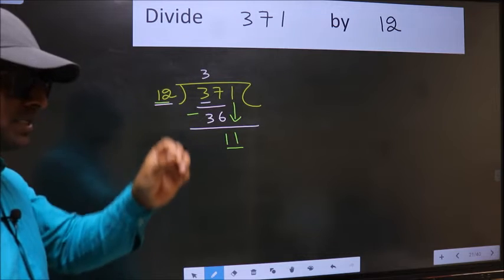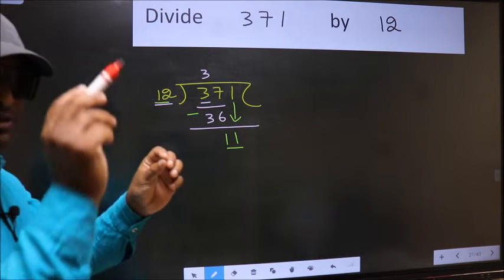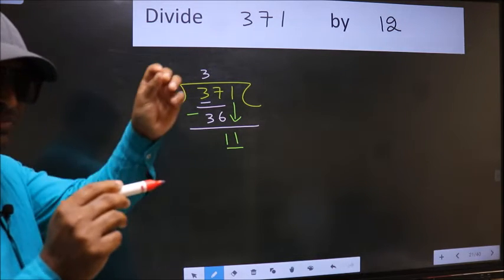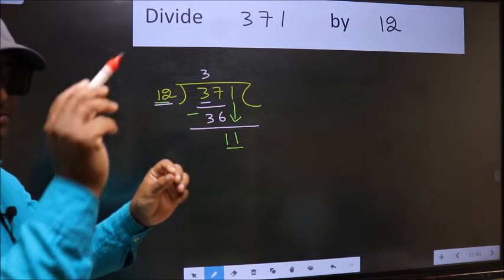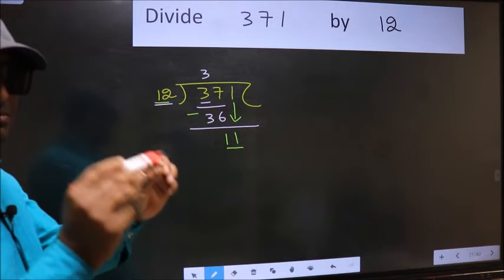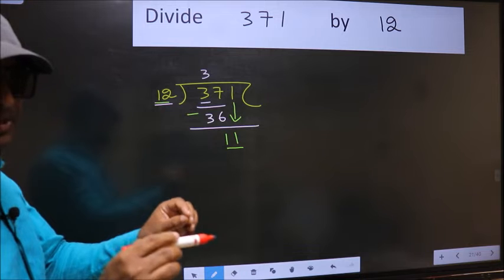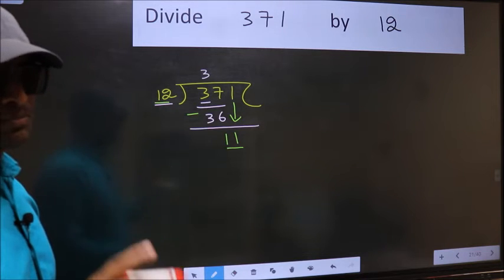Bringing down the number and also putting a dot and taking 0—both at the same step, you should not do. Instead, what you should think of is: which number should we take here?